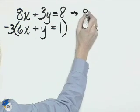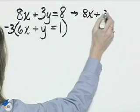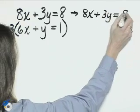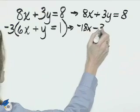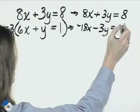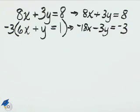This first equation, 8x plus 3y equals 8, stays the same. The second equation becomes negative 18x minus 3y equals negative 3, multiplying all those parts by negative 3.